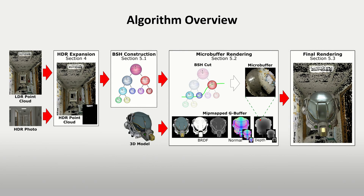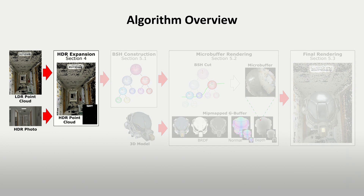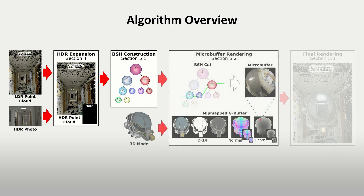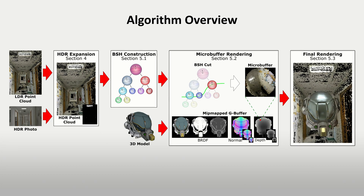This paper presents a new framework to use a captured colored point cloud of a real-world scene for the computation in real-time of the contribution of lighting on a 3D object placed inside the scene. In a pre-processing step, the algorithm expands the dynamic range of a point cloud using an input HDR photo. Then it computes in GPU a bounding sphere hierarchy to use in the real-time rendering of the 3D object. The proposed point-based global illumination algorithm computes a micro-buffer for each pixel of the viewport, using the geometry shader and a multi-resolution G-buffer to speed up the visit of the BSH. Finally, the micro-buffers are combined with the BRDF data to obtain the final rendering.